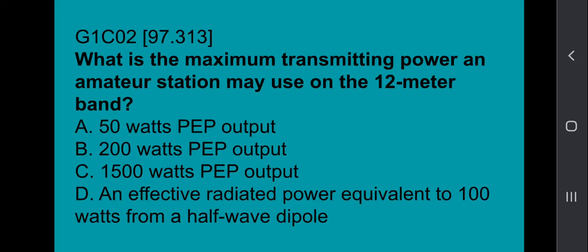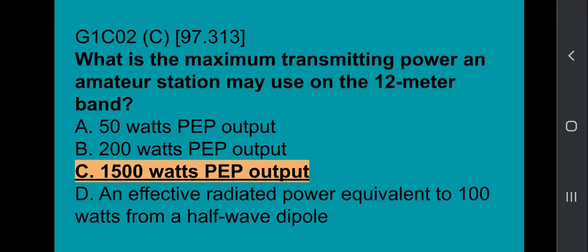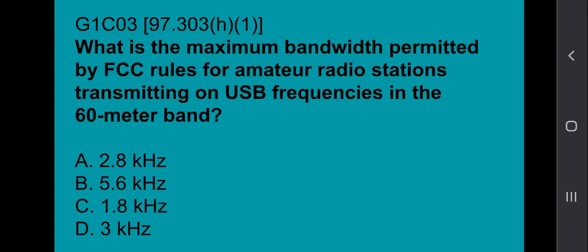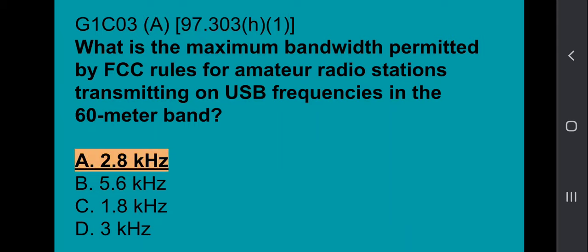G1C02: What is the maximum transmitting power an amateur station may use on the 12-meter band? Amateurs may use 1500 watts PEP output. G1C03: What is the maximum bandwidth permitted by FCC rules for amateur radio stations transmitting on upper sideband frequencies in the 60-meter band? That answer is 2.8 kHz.